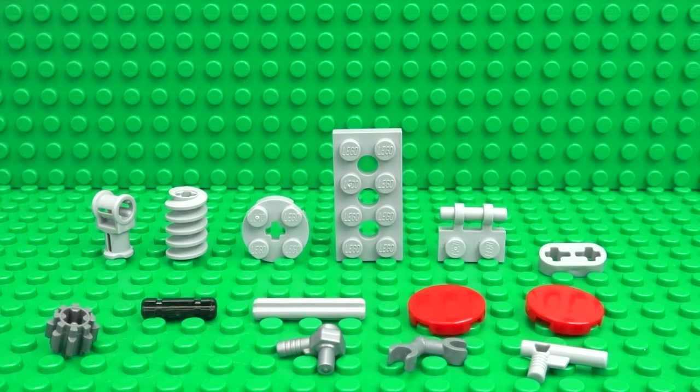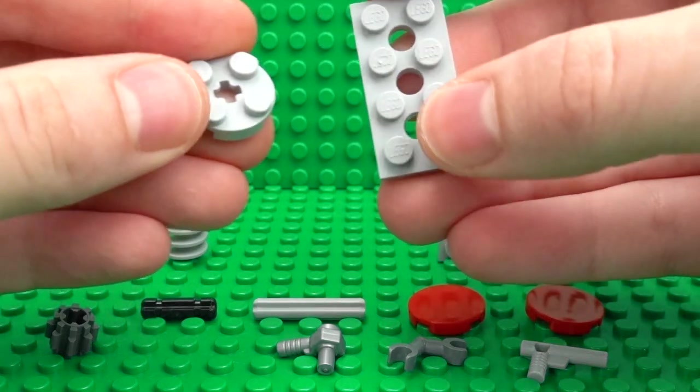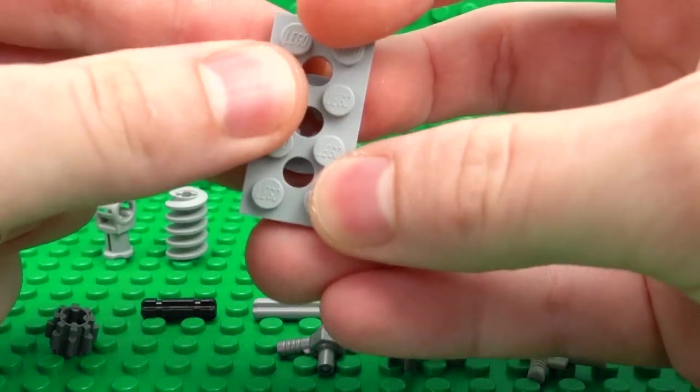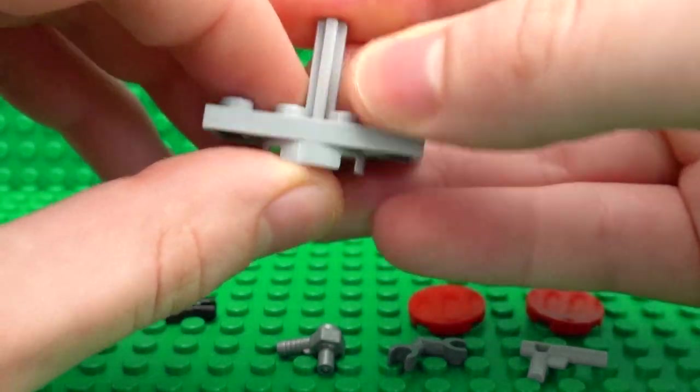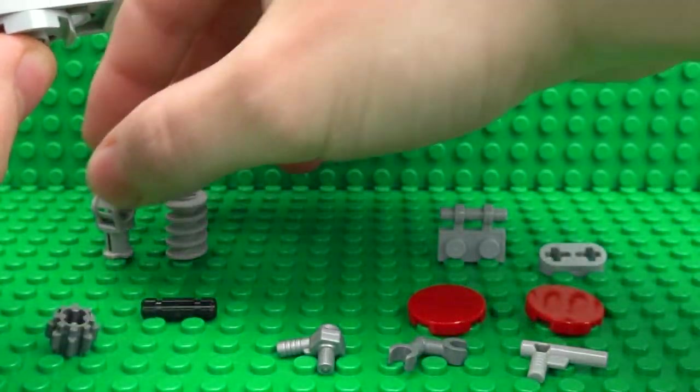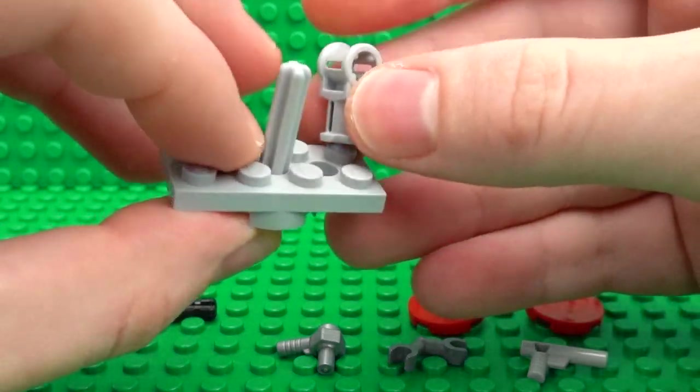Once you've collected all your parts, we'll start with this technic 2x4 plate and a round 2x2 plate underneath and we can stick a 1x3 axle through the middle. Then this technic piece can be clipped in between the studs of the plate just like that.